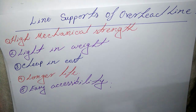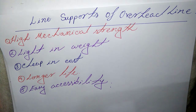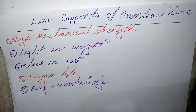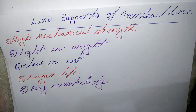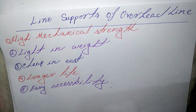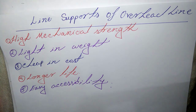In this tutorial, I discuss line supports of overhead lines and their types. The supporting structures for overhead line conductors are various types of poles and towers, and these are called line supports.